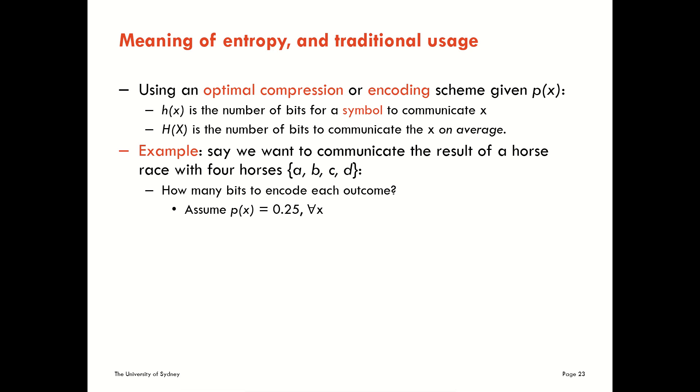As another example now, thinking about entropy through this lens of optimal encoding, let's say we want to communicate the result of a horse race. And let's say we have four horses. We want to ask how many bits do we need to encode each outcome. We can think about that on average or we can think about each specific outcome of the race. Obviously we want to use the Shannon entropy to talk about the number of bits to encode the outcomes on average and the Shannon information content to talk about the number of bits to encode each potential outcome.